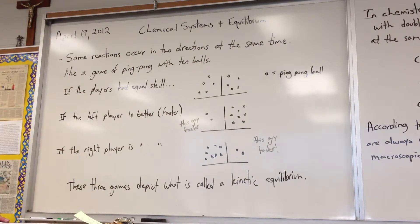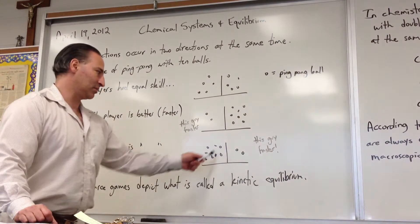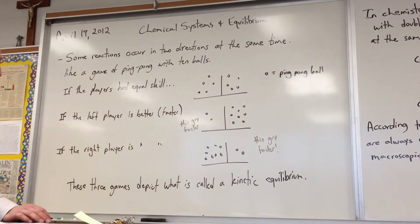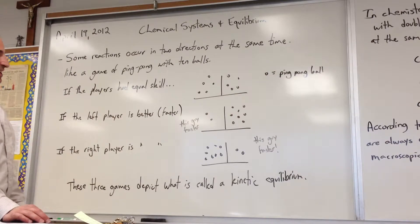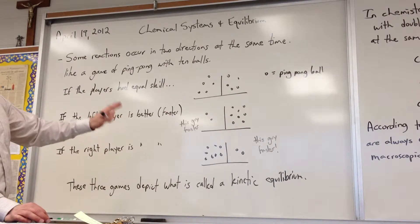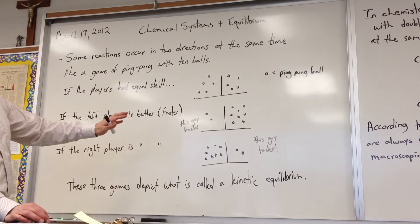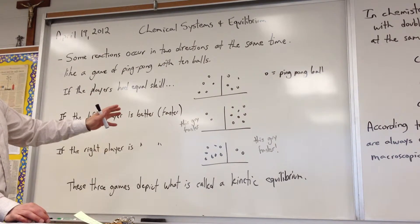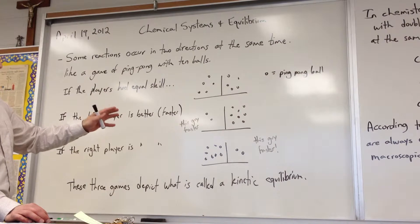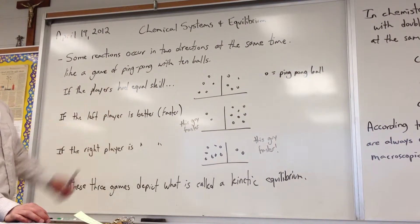And if we reverse it, if the good player is on the right side, it would not take long to establish the same equilibrium the other way. So these three games depict what is called the kinetic equilibrium. It's an equilibrium where you can take a snapshot of it and it looks like there's no action, but in fact, what we're trying to depict here is something that is happening continuously.